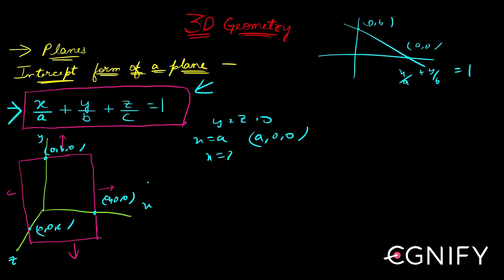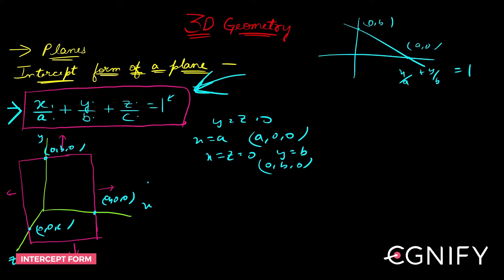Similarly, putting x = z = 0 gives y = b, so (0, b, 0) is a point on the plane. You can check the third point likewise. Whenever you see the form x/a + y/b + z/c = 1, you should know that a, b, c represent the distances along the axes where the plane strikes each axis from the origin.